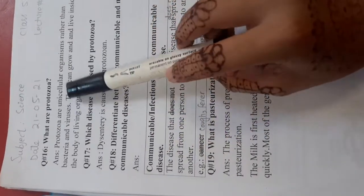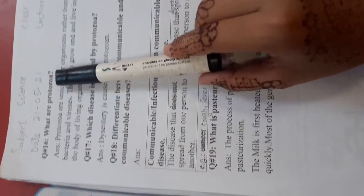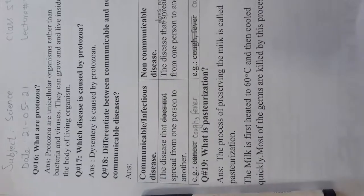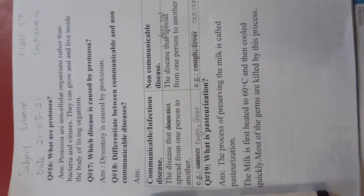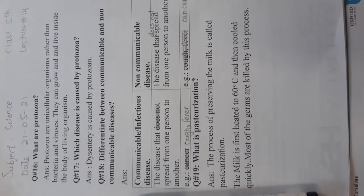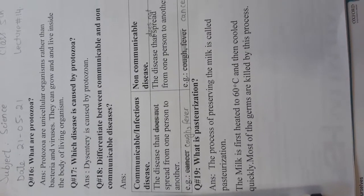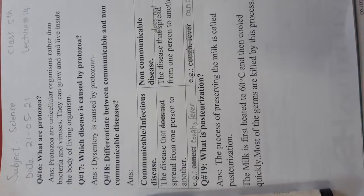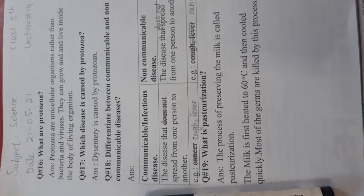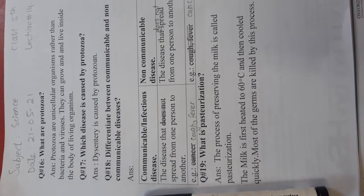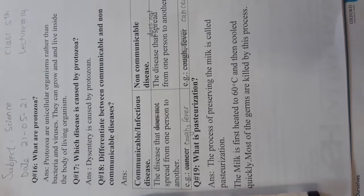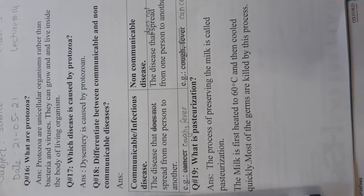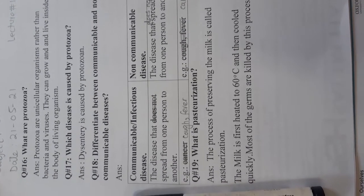What are protozoa? When we started this chapter, we saw microorganisms and their types. There are four types of microorganisms: viruses, bacteria, fungi, and protozoa. We have studied the first three in detail. Today we will study protozoa.